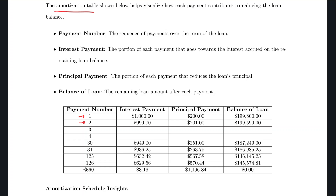The amortization table has columns for payment number, interest payment, principal payment, and loan balance. The table shown includes payments 1, 2, 3, 4, then jumps to 30, 31, 125, 126, and 360 — since a 30-year loan has 360 monthly payments, only selected entries are shown from the beginning, mid-range, and end.